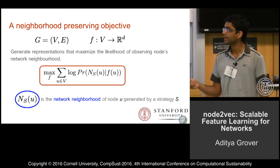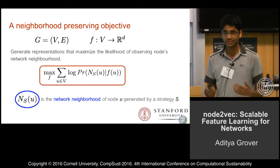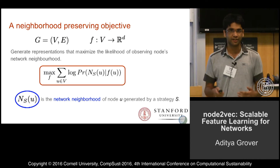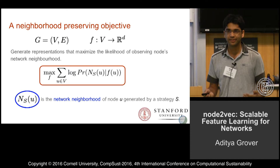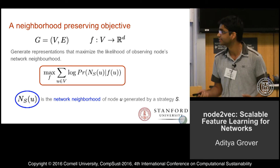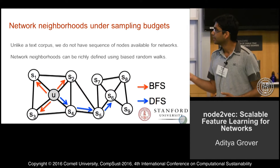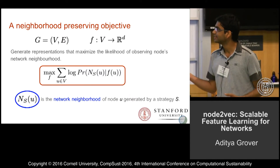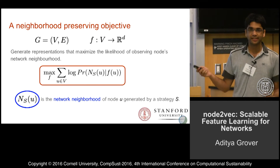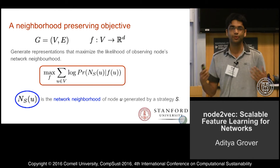Specifically, given a graph which is a set of vertices and edges, we want to learn a function f that maps the vertices to a low dimensional space of continuous real value features. This objective is saying that we want to learn feature representations which are more predictive of the neighborhood nodes.